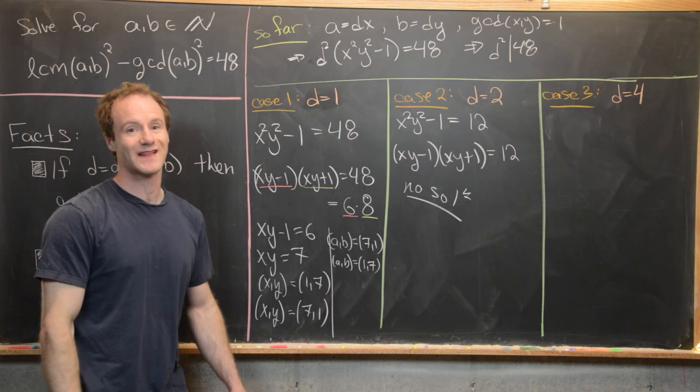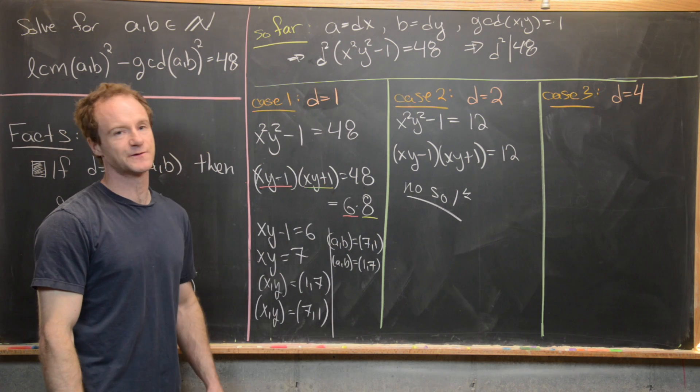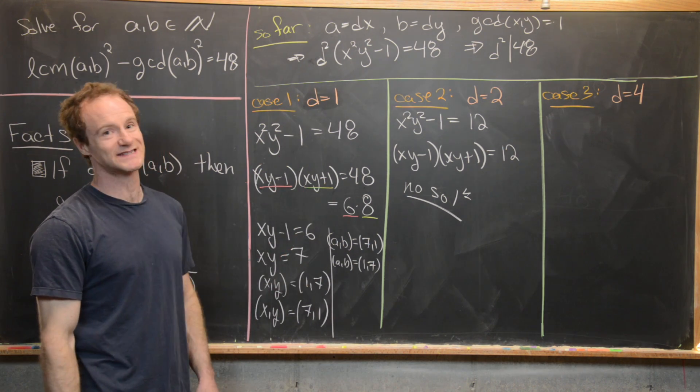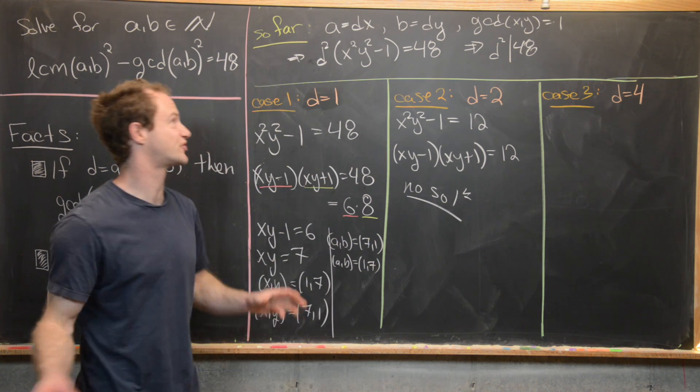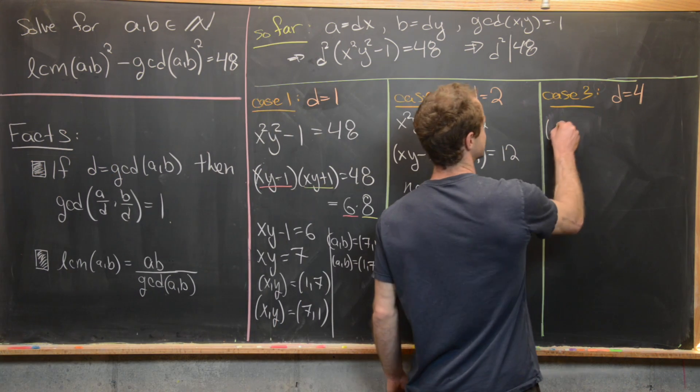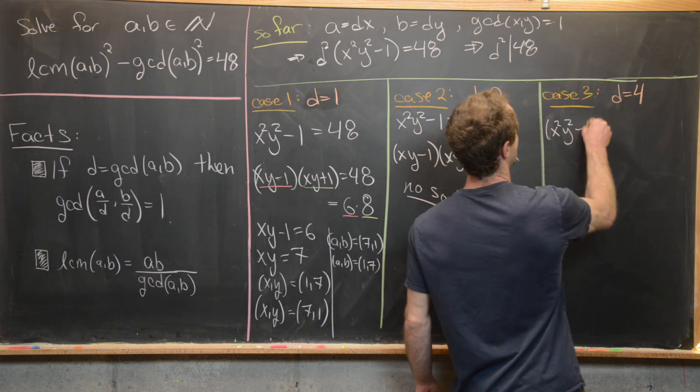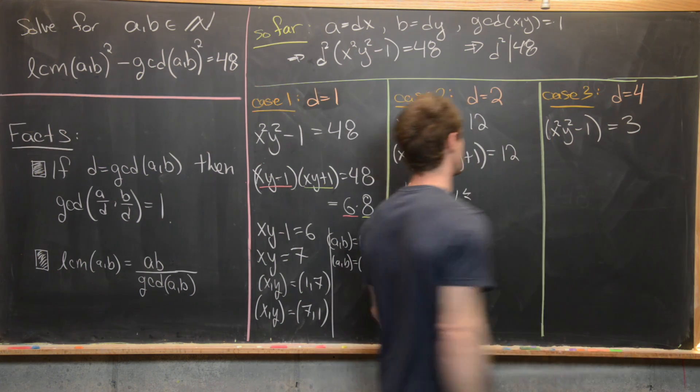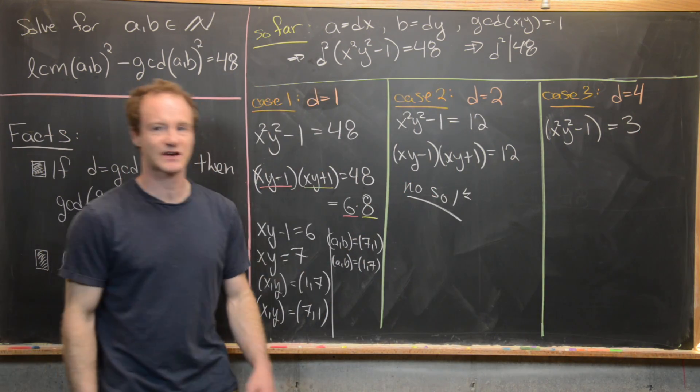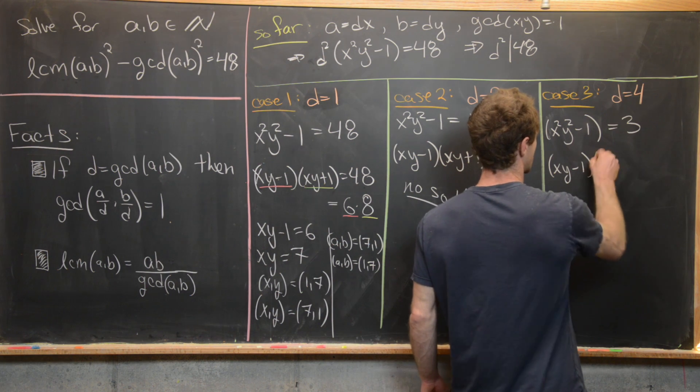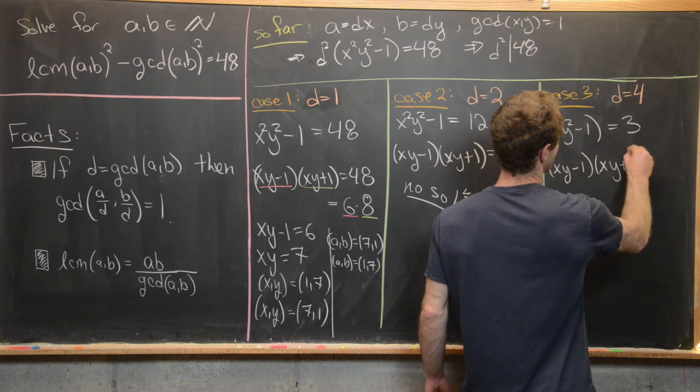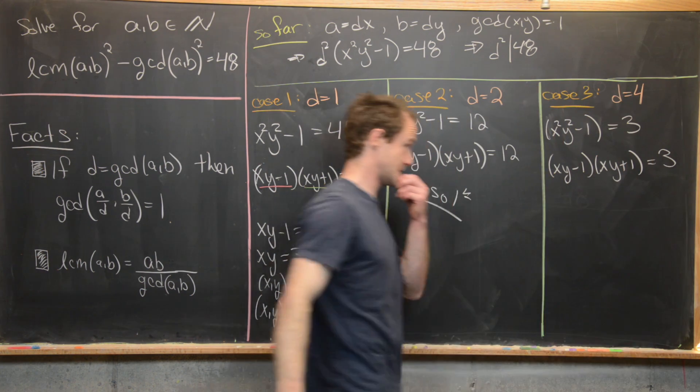So let's finally look at the last case. So we have D equals 4, which makes D squared equal to 16. So when we divide this 16 over, we get 48 divided by 16, which is 3. And so that gives us this equation X squared, Y squared minus 1 equals 3. We can do the same kind of thing, factor it like a difference of squares. So here we have X, Y minus 1 times X, Y plus 1 equals 3.